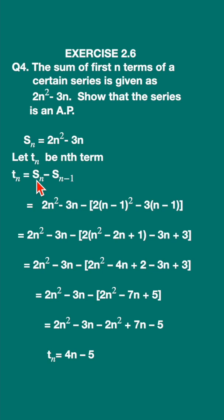If we subtract the sum of the n terms minus the sum of the n minus 1 terms, you will get the nth term.